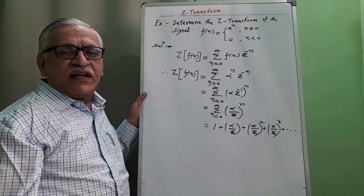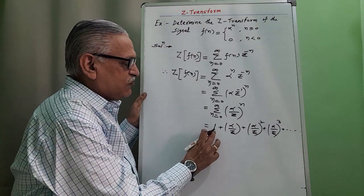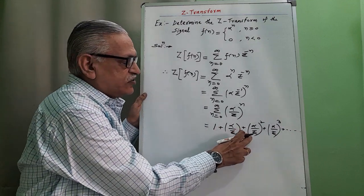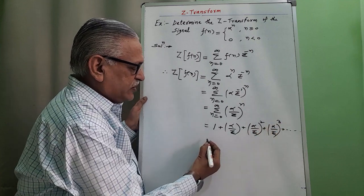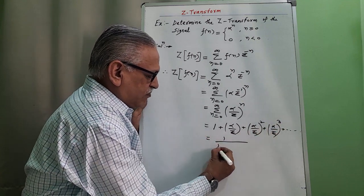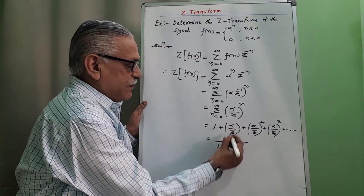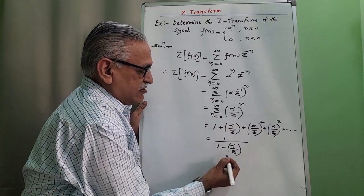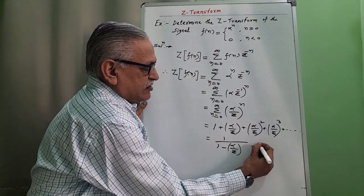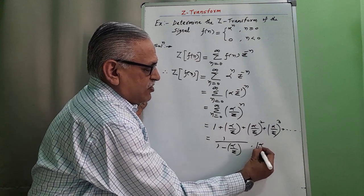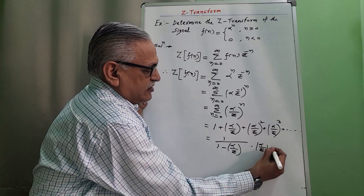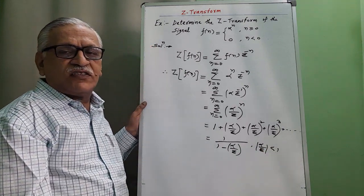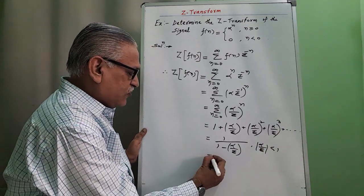As per binomial theorem, this sum 1 plus X plus X square plus X cube and so on, is nothing but 1 over 1 minus X, where X is alpha by Z, with the condition mod of X, that is mod of alpha by Z, is less than 1. This is the region of convergence.